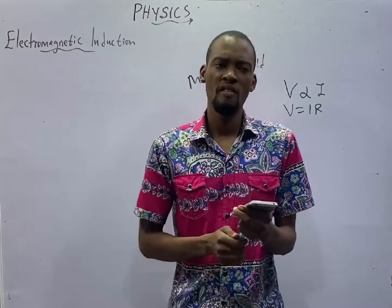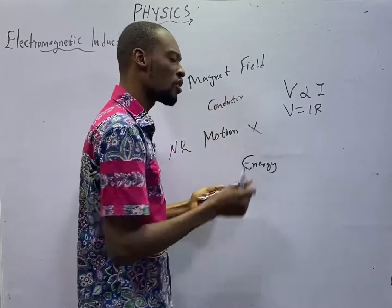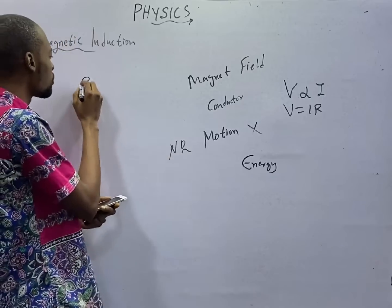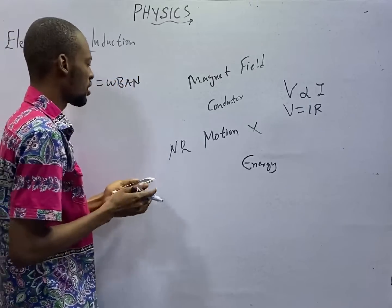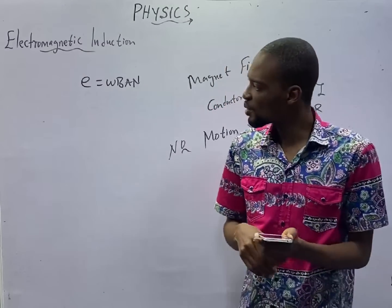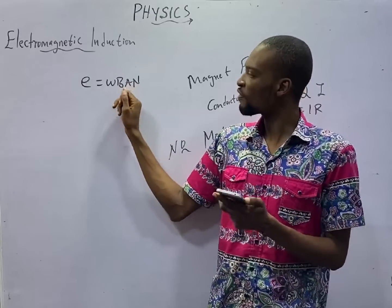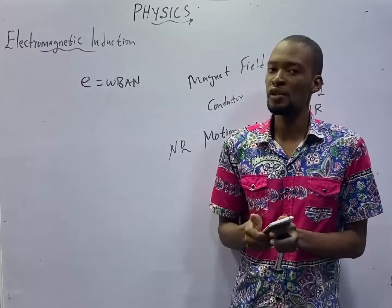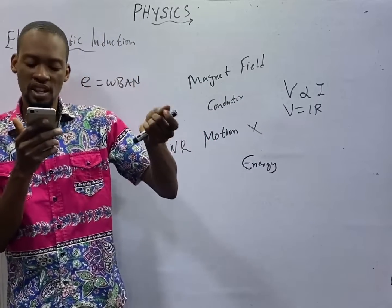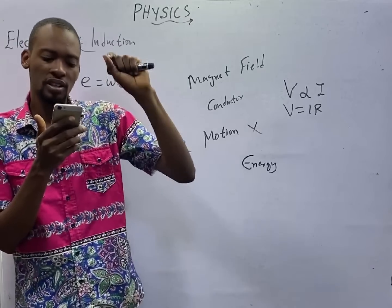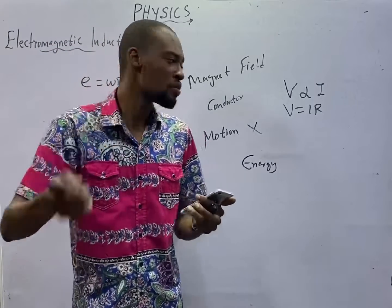What are the factors that determine the EMF produced or induced when a magnet is moved through a coil of wire or through a conductor? The EMF produced is proportional to — or equals — W, B, A, N. I have given you this formula before. W stands for speed, B stands for magnetic strength, A stands for area, and N stands for number of turns. So a magnet moved through a coil of wire — the EMF generated depends on the number of turns in the coil, the strength of the magnet, and the speed at which the magnet is moved.